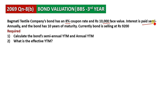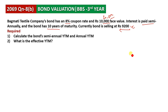The bond's maturity period is 10 years. Currently, the bond is priced at 9,200 rupees, and the face value is 10,000 rupees. This question asks us to find the semi-annual YTM or annual YTM. Semi-annual or annual YTM is also the effective YTM.